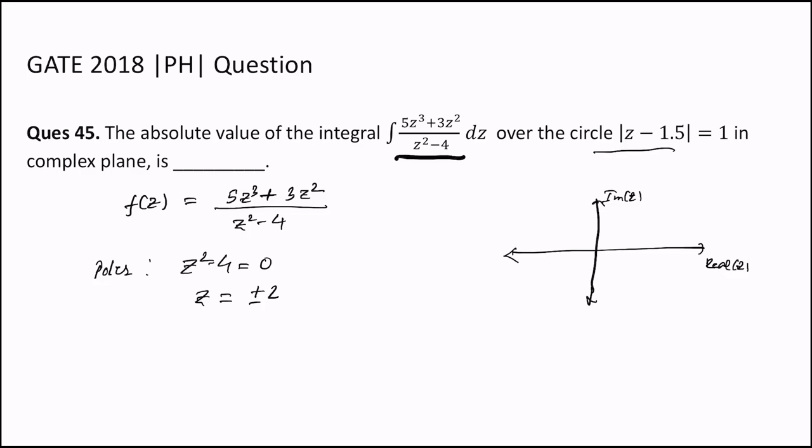This circle is centered at around 1.5, its radius is 1, so it extends from 0.5 to 2.5, or you can say from 1/2 to 5/2. This is 1/2 (0.5) to 5/2 (2.5).